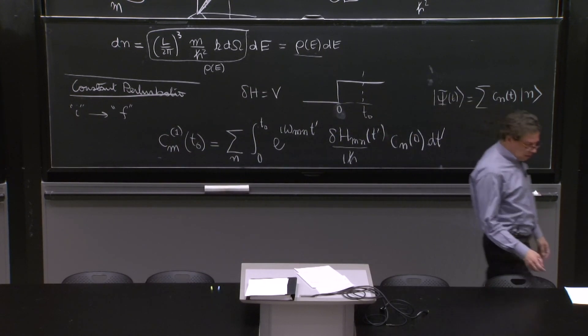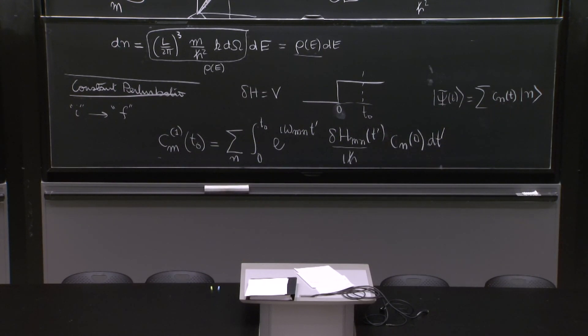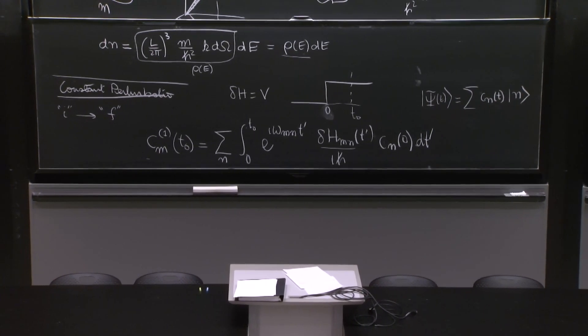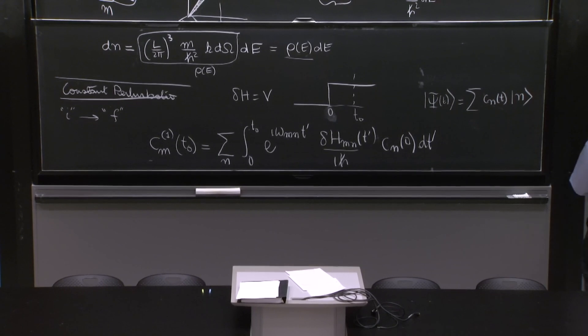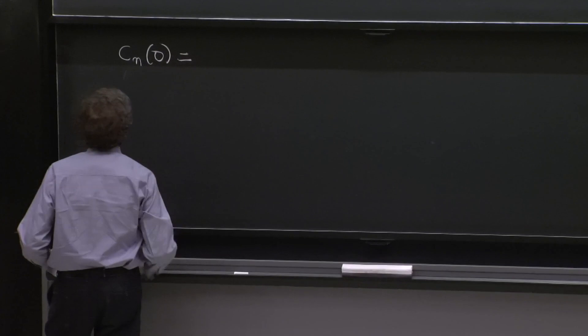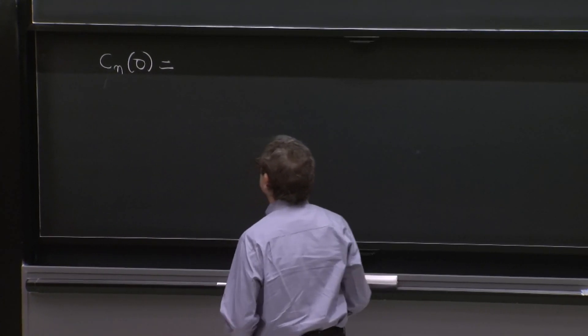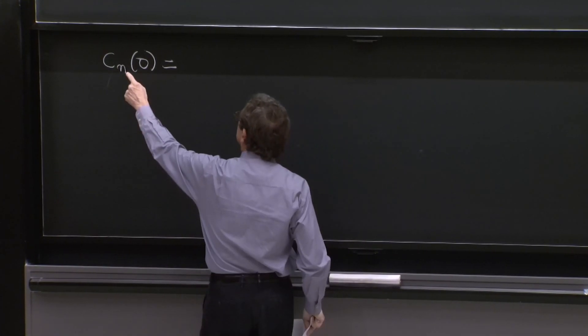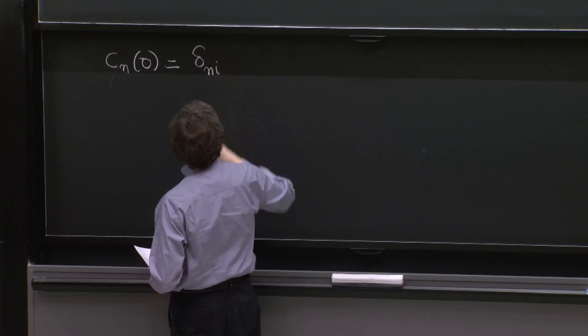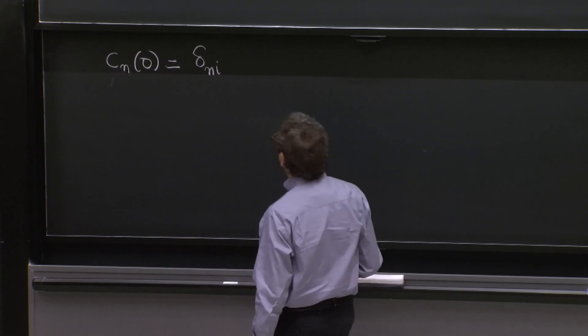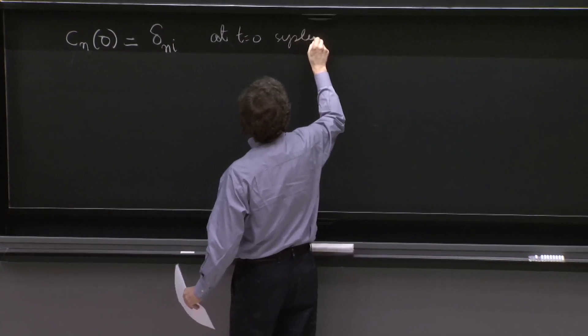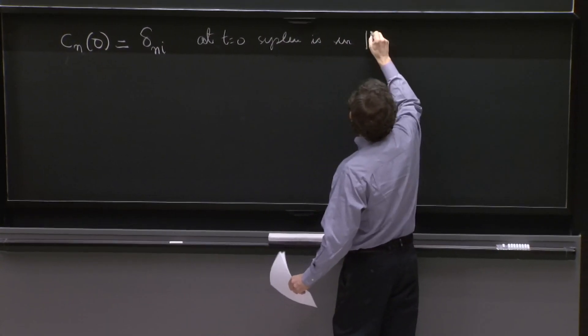So what do we have to do now? We have a transition from some initial state to a final state. So what does that mean? It means that c n 0, it only exists when n represents the initial state. So I'll just write delta n i. At time equals 0, the system is in the state i.